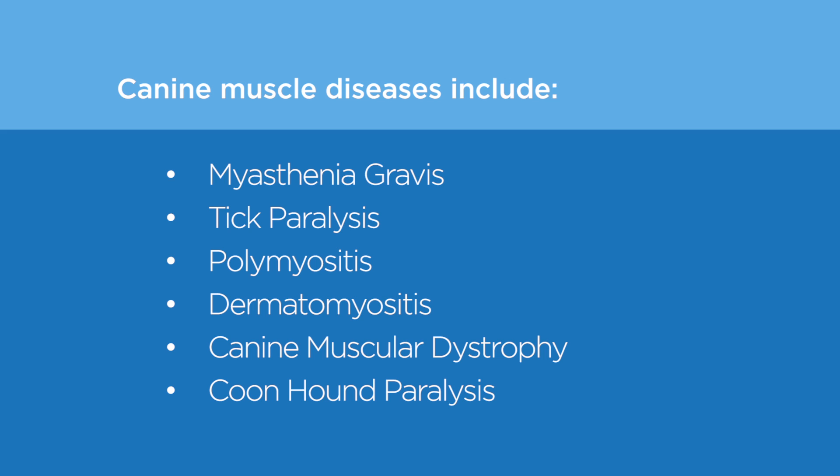Tick paralysis is caused by a toxin that produces ascending paralysis of the skeletal muscle. Polymyositis involves inflammation that produces lameness and pain in the skeletal muscles, which cannot be attributed to any other cause. Polymyositis often involves the muscles of mastication, and another common sign can be lockjaw.